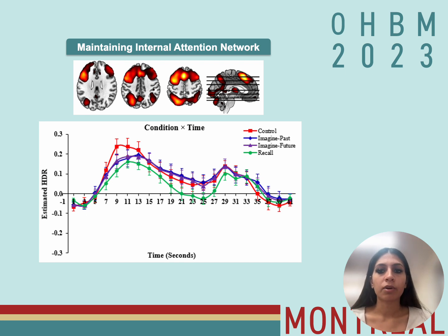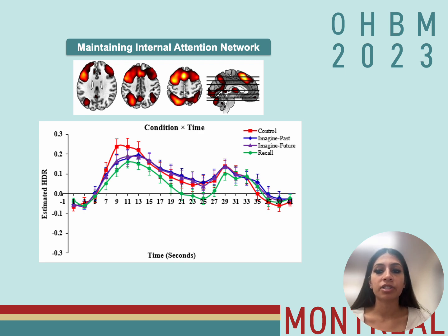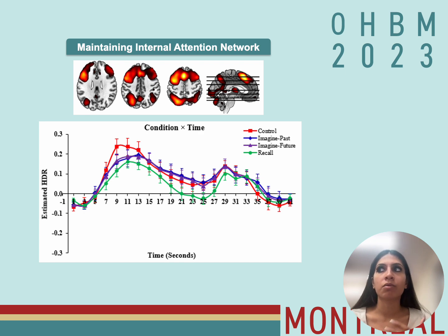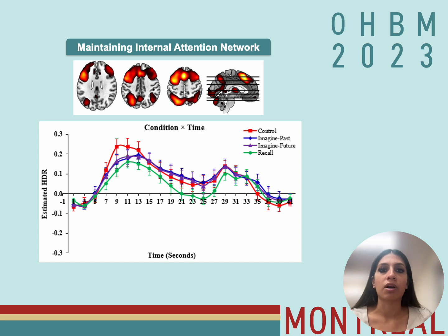Notably, the maintaining internal attention network showed a less pronounced activation in the recall condition relative to the imagined conditions. We think this is likely because in the imagined conditions participants are required to internally generate scenarios and focus on them, whereas in the recall condition they undergo a more automatic process of recalling memories rather than generating scenarios. Therefore, the recall condition required less volitional attention to internal processes, leading to a less pronounced activation of the maintaining network.